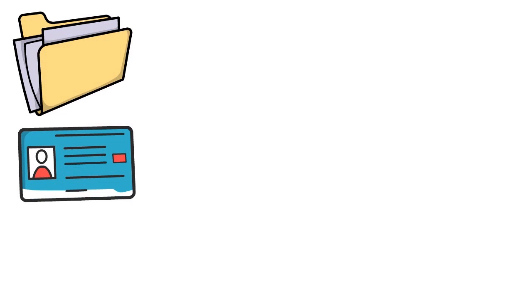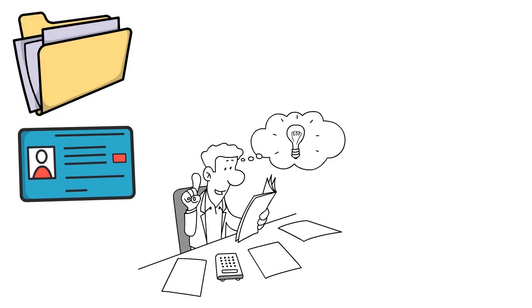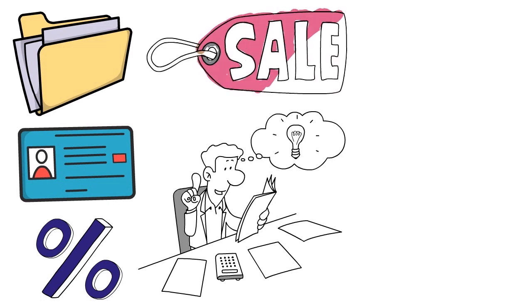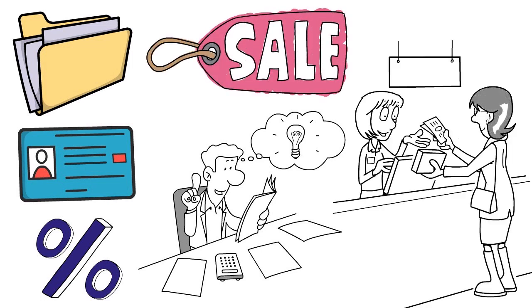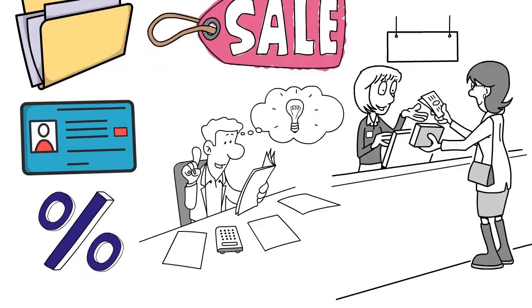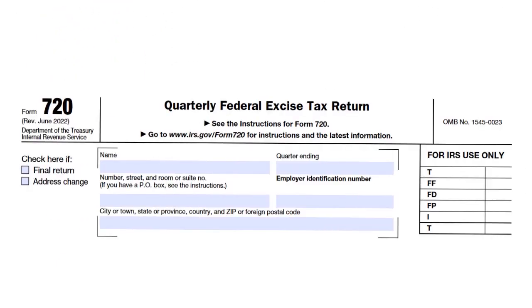Your excise taxes are either a percentage of total sales or a percentage of units sold, depending on your specific business. The first part of IRS Form 720 asks for basic business information — nothing really complicated. Make sure you check, if applicable, the boxes for 'final return' or 'address change' on the left side of the form.